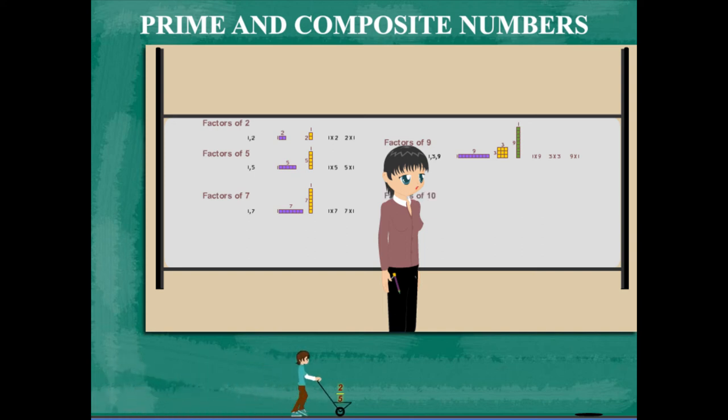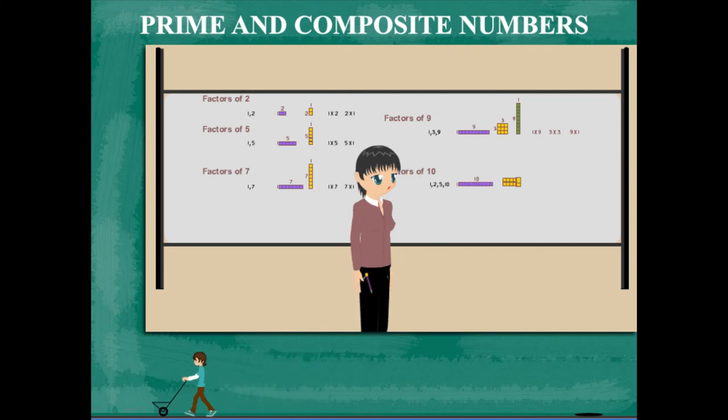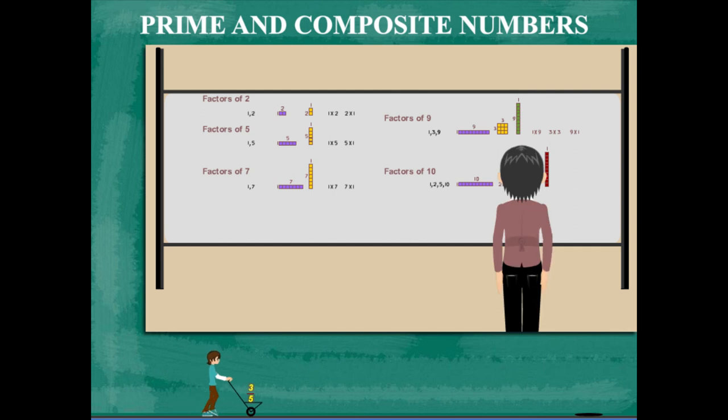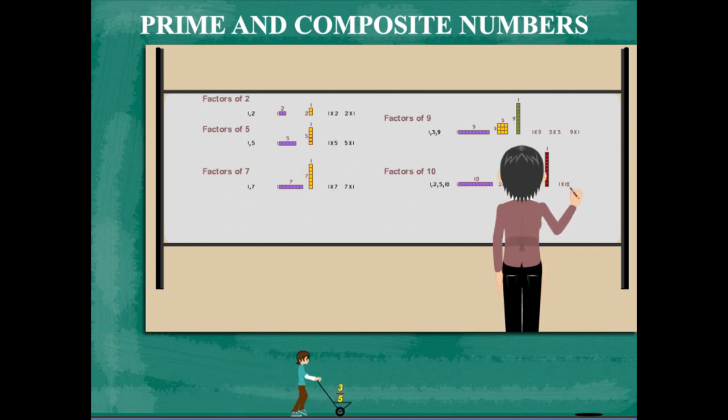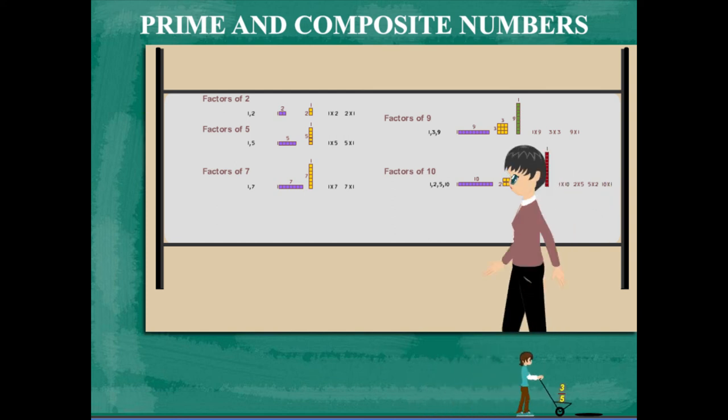And now she writes the factors of 10. These are 1, 2, 5 and 10. So, this is also a composite number.